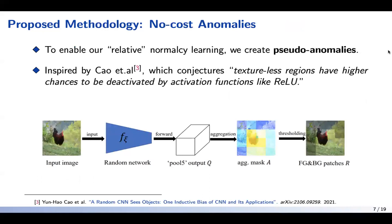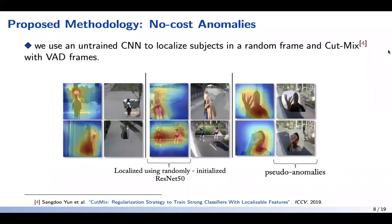To enable our relative normalcy pattern, we create pseudo-anomalies. Inspired from a recent work, we use a randomly initialized network which focuses on the foreground objects in a coarse manner and creates pseudo-anomalies at no training cost. Some examples of such pseudo-anomalies can be seen on your screen.